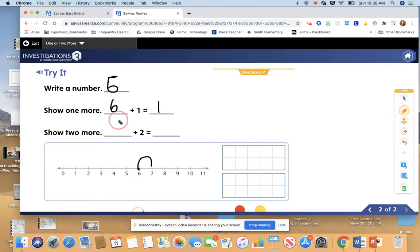Let's try it with two more. I start with six. And this time, I want to know two more. This time, I'm going to move twice. One, two. Six plus two equals eight.